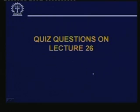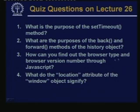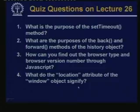Some questions from today's lecture: What is the purpose of the setTimeout method? What are the purposes of the back and forward methods in the history object? How can you find out the browser type and browser version number through JavaScript? What does the location attribute of the window object signify? In our next lecture we shall be continuing with JavaScript. With this we come to the end of this lecture. Thank you.